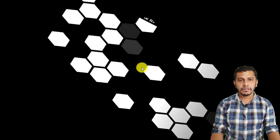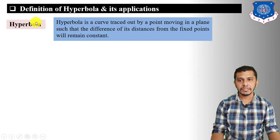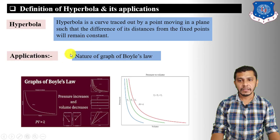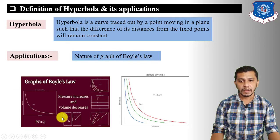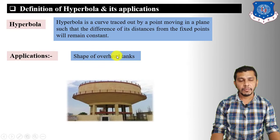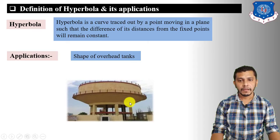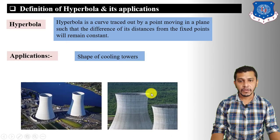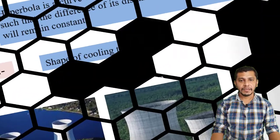Hyperbola is a curve traced out by a point moving in a plane such that the difference of its distances from two fixed points remains constant. Hyperbola is used to define the graph of Boyle's Law — the pressure versus volume diagram. It is also used to define the shape of overhead tanks and the shape of cooling towers.